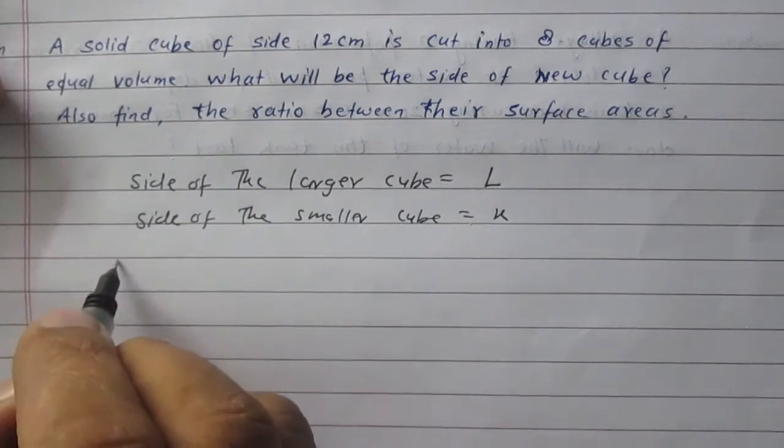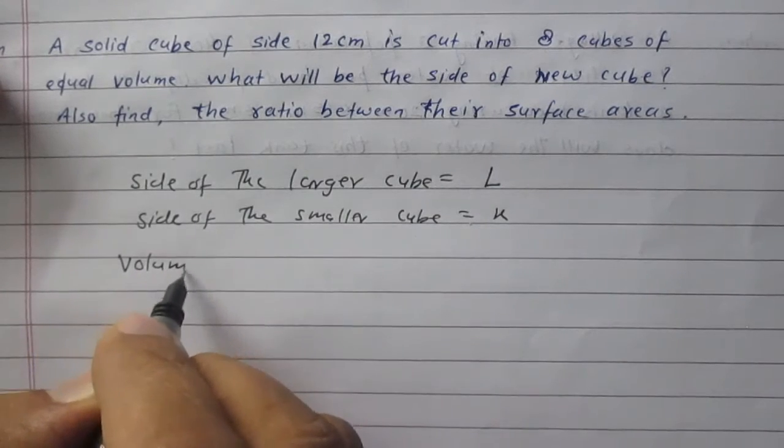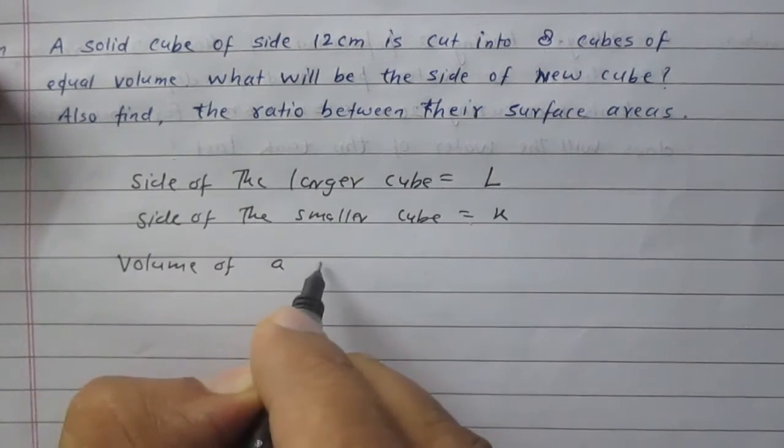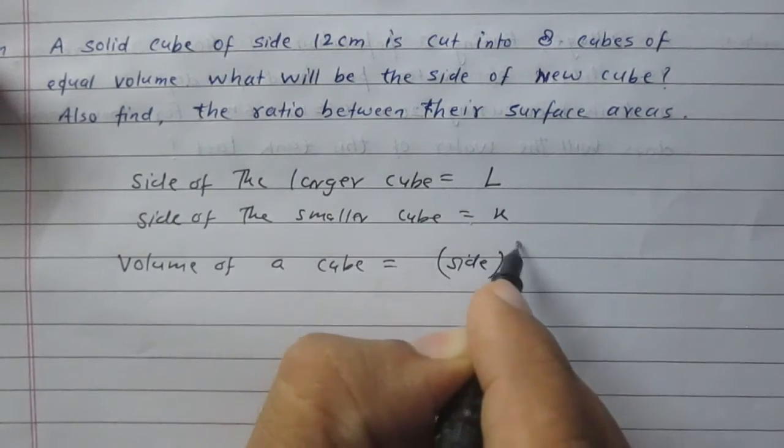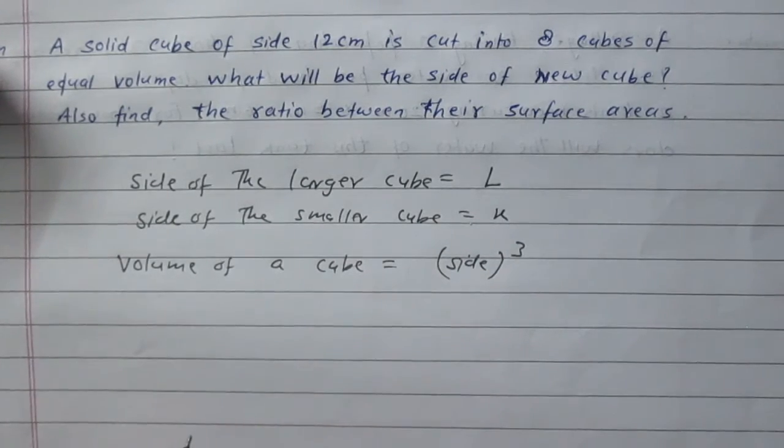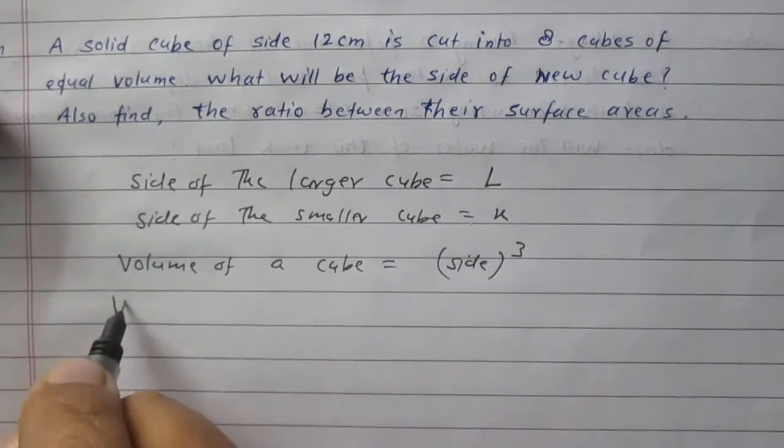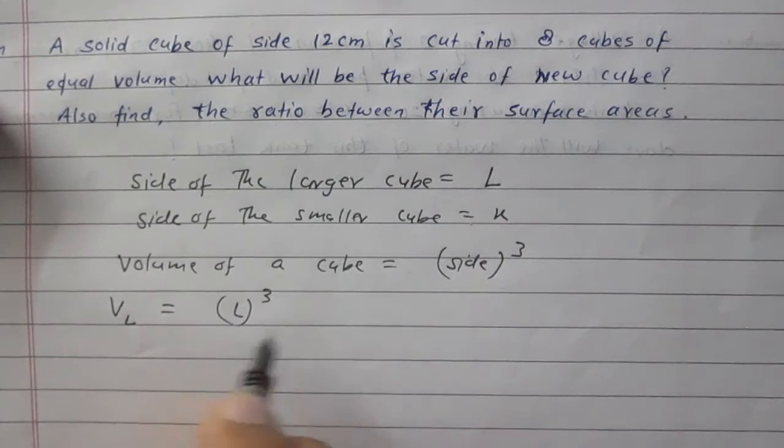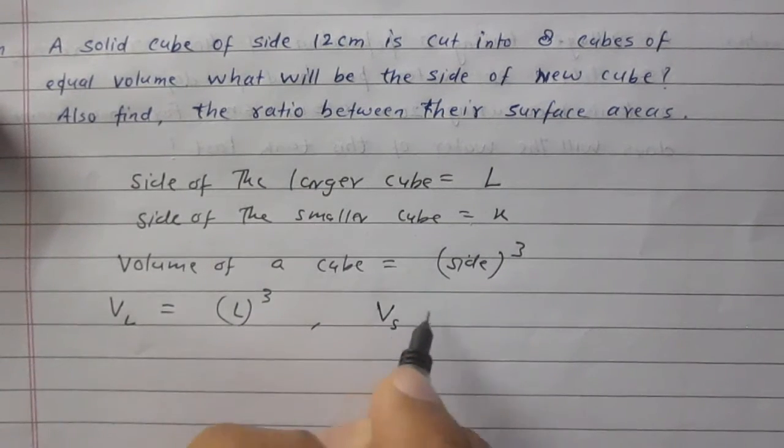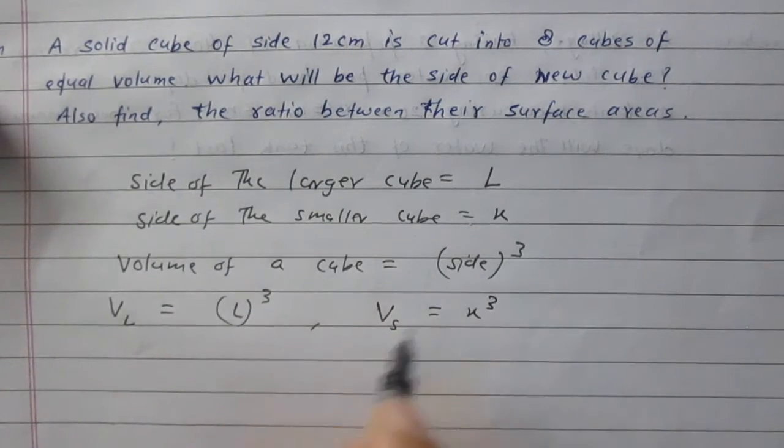According to the formula, we know that volume of a cube is cube of its side. Volume of larger cube is L cube and volume of smaller cube is X cube.